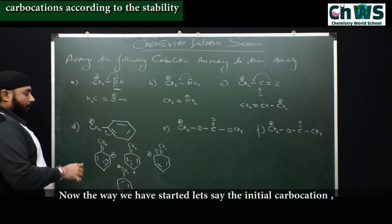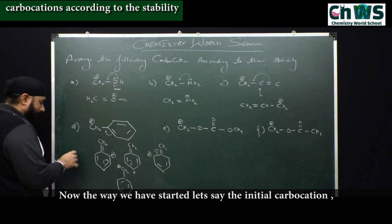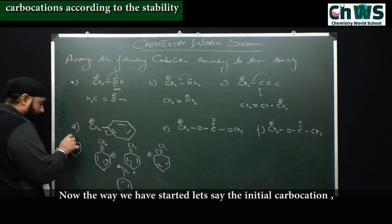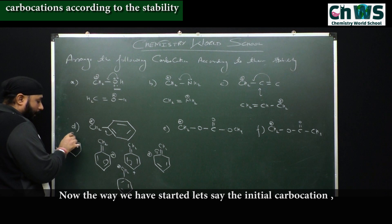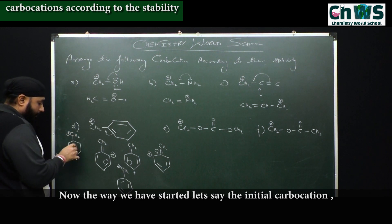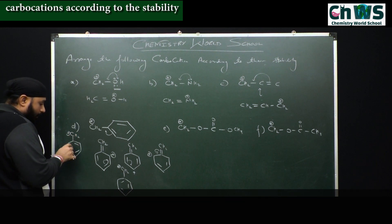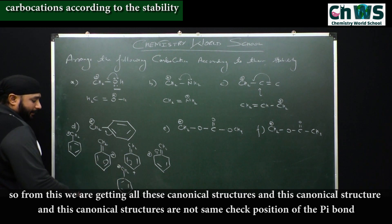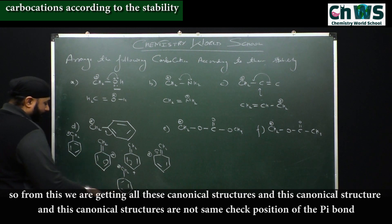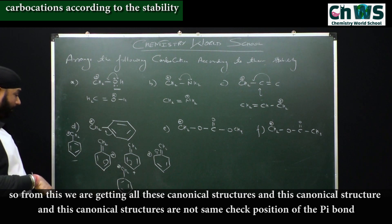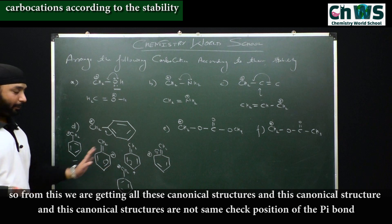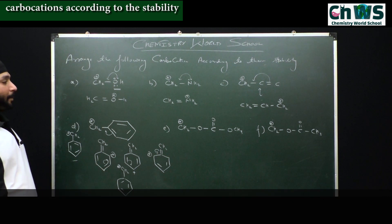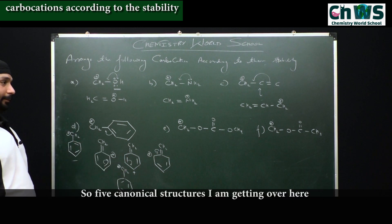The initial carbocation we started with gives all these canonical structures — and these canonical structures are not the same. Check the position of pi bonds carefully. So five canonical structures are obtained for the benzyl carbocation.